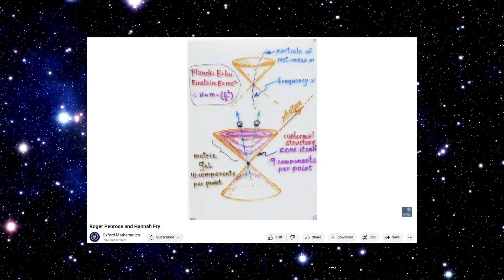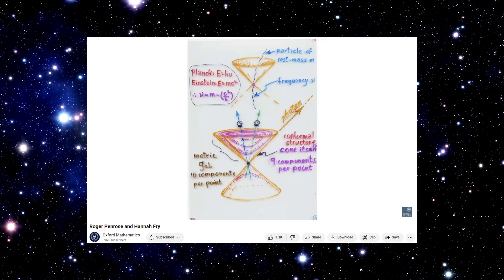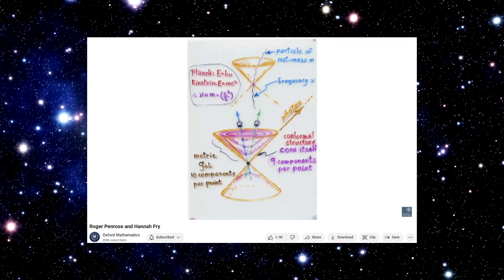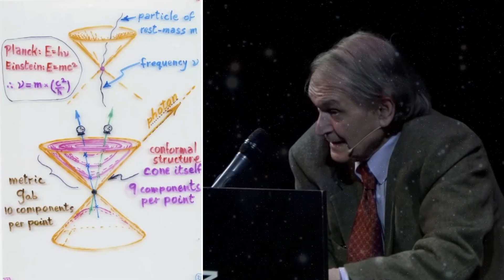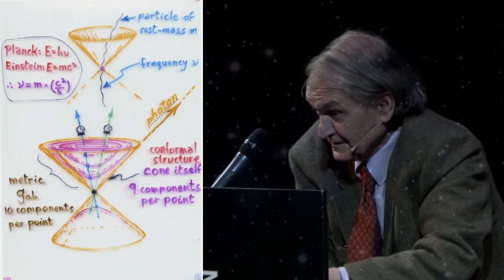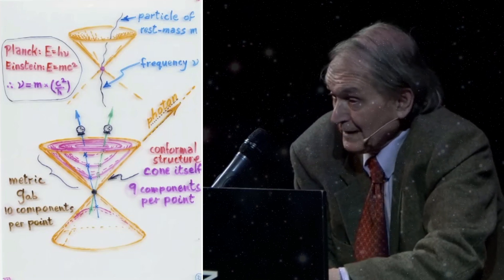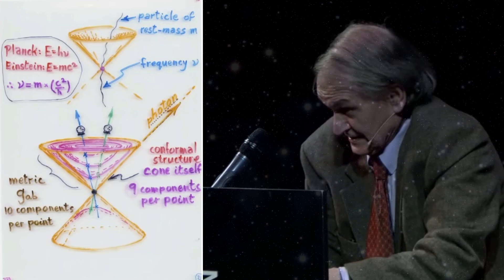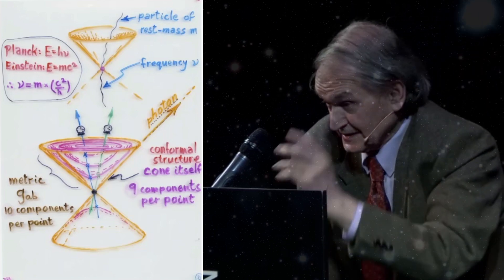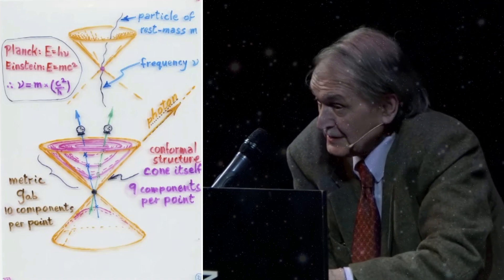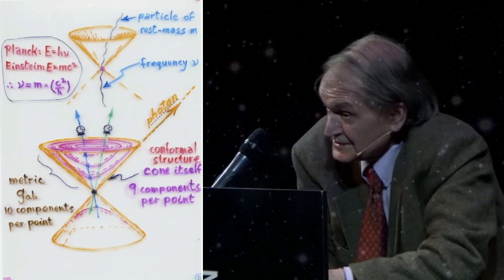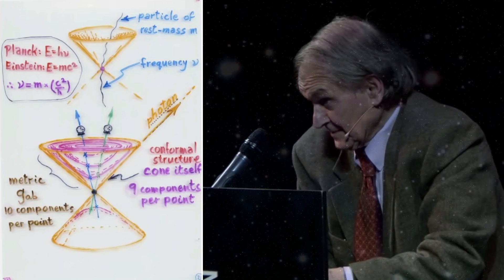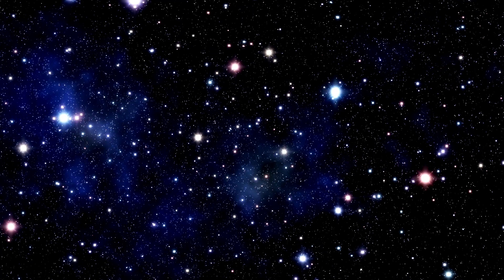These are the two most important formulae of 20th century physics. One of them is Einstein's E equals mc squared, which tells you that energy and mass are equivalent. The other formula is Max Planck's E equals h-nu — that's the frequency. E is again the energy, and Planck tells us that energy and frequency are equivalent. So we have these two formulae, both telling you energy is something: one tells you it's equal to mass, the other tells you it's equal to frequency, apart from constants. So that tells you that mass and frequency are equivalent. Without mass, there is no frequency, which means time does not exist.